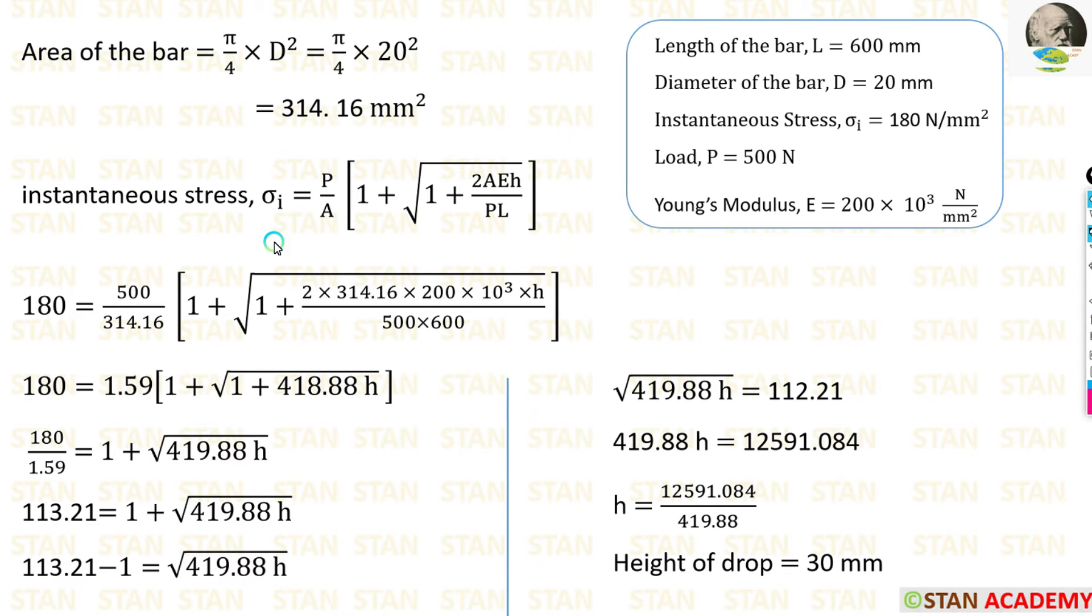In the previous video, we have already derived this formula. The instantaneous stress when the load is applied with impact, sigma i is equal to sigma times 1 plus root of 1 plus 2AEH by PL. In this formula, everything is available from the question, but we do not have the area. Let us calculate the area.